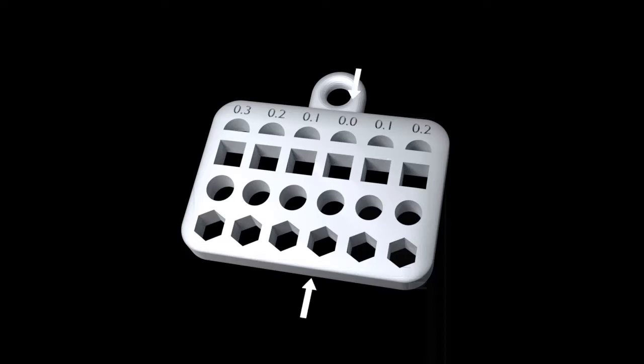The holes here denoted by 0.0 are a 5 millimeter hole and they increase by 0.1 millimeter each time until they go up to 5.3 millimeters, and on the right they decrease by 0.1 millimeters until they're as small as 4.8 millimeters.